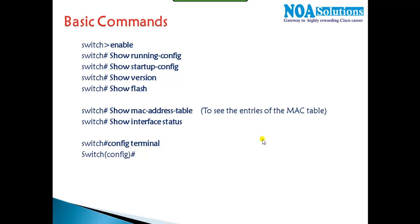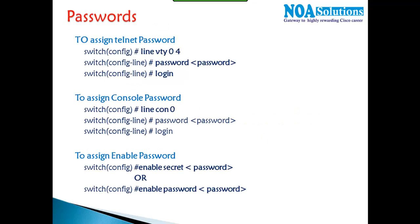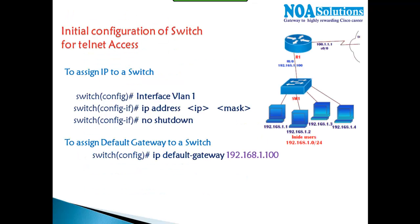These are the basic configurations we need to know. All commands are very similar to what we used for routers. The key difference is assigning an IP address on the switch for Telnet access. While not strictly required, in production networks all switches are assigned IP addresses so they can be accessed remotely via Telnet.